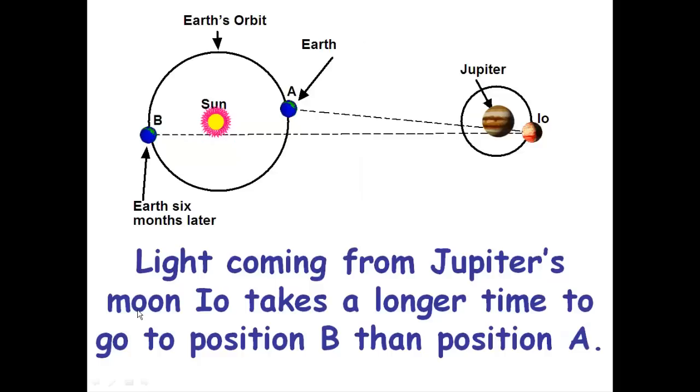Well, he just simply said, if light has an actual speed to it, light coming from Jupiter's moon should take longer to go from point A, when the Earth is in its orbit there, to point B, because there's a bigger distance. If it was instantaneous when it's at point B, we should be able to predict exactly where Io would be, because every two days it would be right back in that same spot.